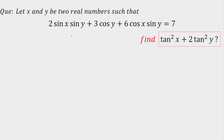Today we are going to solve a question on trigonometry. The question is: let x and y be two real numbers such that 2 sin(x)sin(y) + 3 cos(y) + 6 cos(x)sin(y) = 7, where x and y are real numbers satisfying this given equation. For the same x and y, you have to calculate tan²(x) + 2 tan²(y).